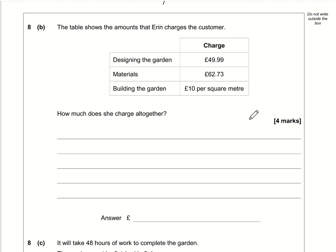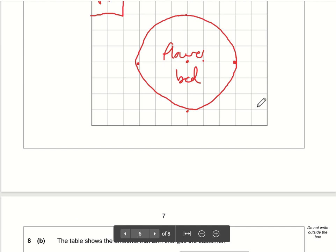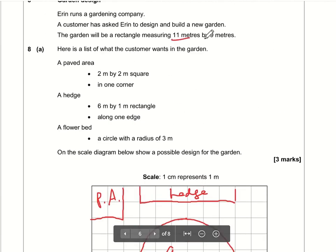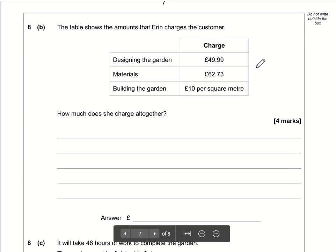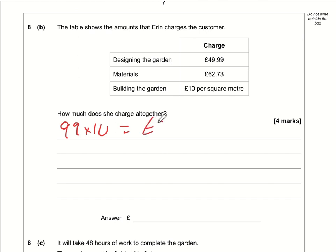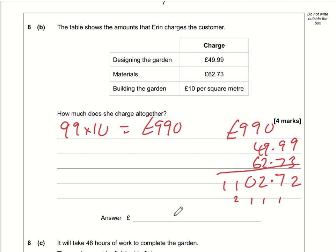The only thing we need to work out is the garden is £10 per square meter. The garden is 11 by 9, so 11 times 9 is 99 square meters. It's going to be 99 times 10 which is £990. We need to add £990, the £49.99, and the £62.73. Let's add these together: that's £1102.72 total.